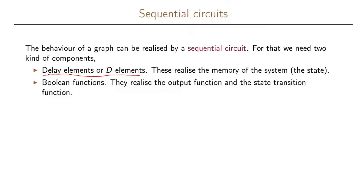The other part that we need are boolean functions. Boolean functions are the ones that we used for our combinational circuits. They will also be used for our sequential circuits — they will realize the output function and also realize the state transition function in our state transition graph.